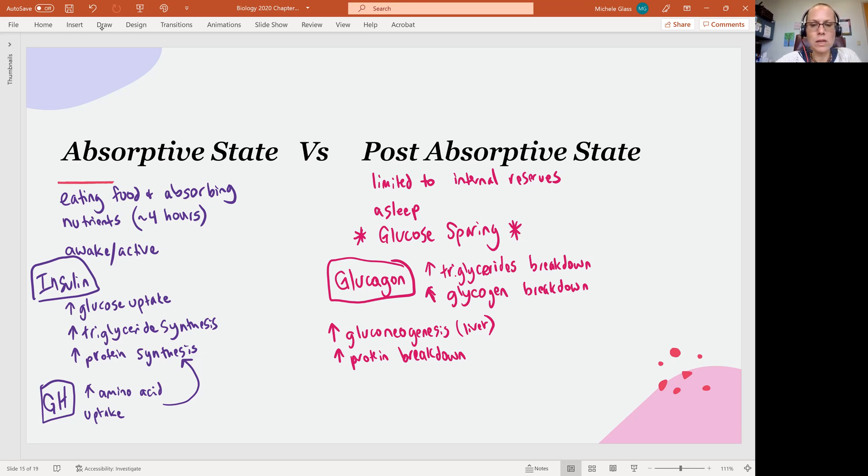We'll also see in this post-absorptive state that this is under the control of epinephrine, glucocorticoids. Growth hormone here is going to trigger also glucose-sparing activity. So growth hormone could do different things depending on if it's in the presence of insulin or glucagon.